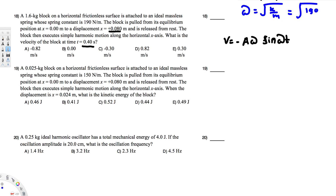Here k is the spring constant, 190 N/m, and mass is 1.6 kg. If you calculate this, you get ω = 10.897 rad/s. Now we have all the information. We plug in the values: v = -Aω sin(ωt), where A = 0.08.